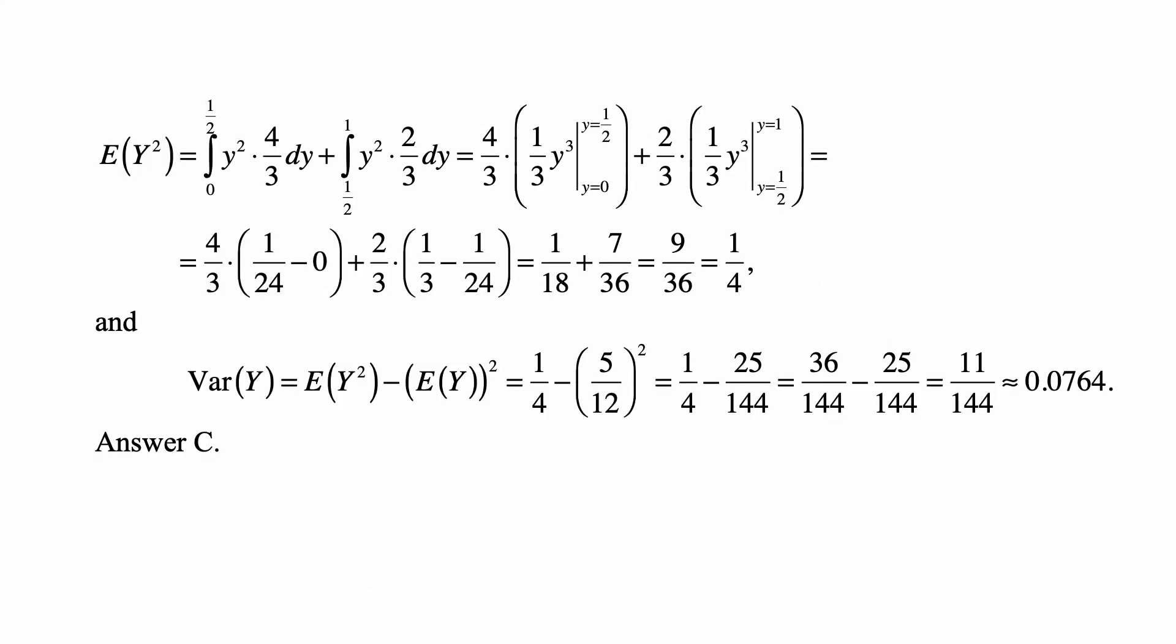The second moment of Y, the expected value of Y squared, is the integral from 0 to 1/2 of y squared times 4/3 dy, plus the integral from 1/2 to 1 of y squared times 2/3 dy.